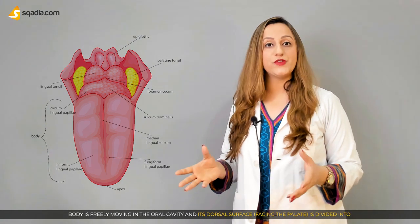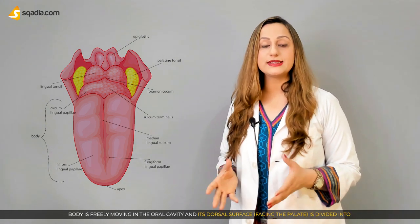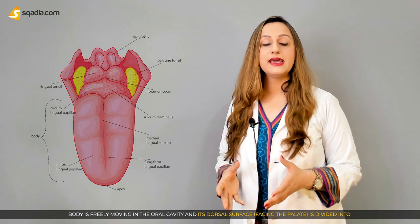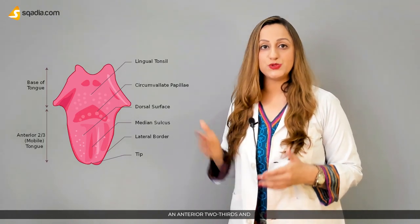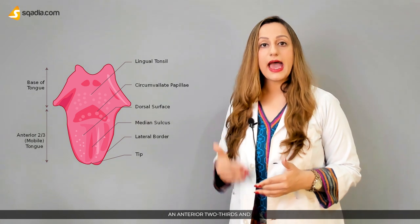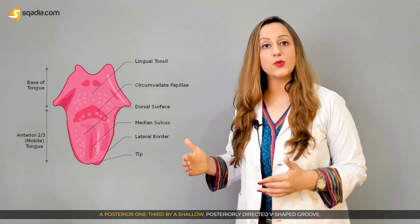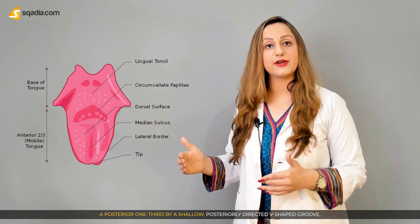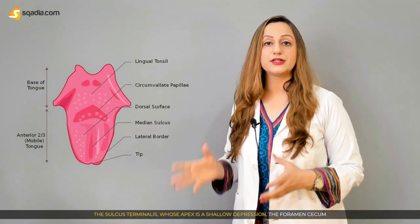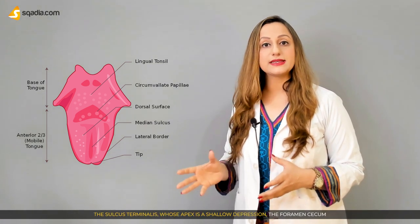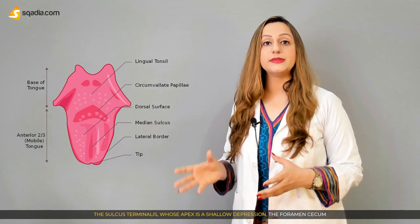The body is freely moving in the oral cavity. Its dorsal surface facing the palate is divided into an anterior two-thirds and a posterior one-third by a shallow, posteriorly directed V-shaped groove — the sulcus terminalis — whose apex is a shallow depression called the foramen cecum.